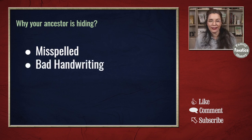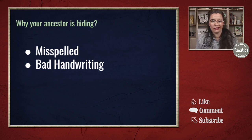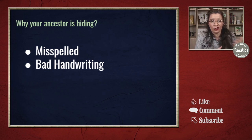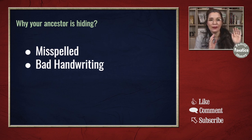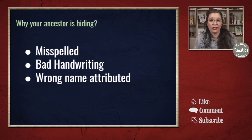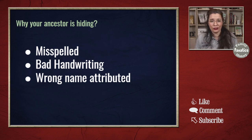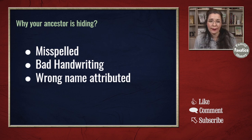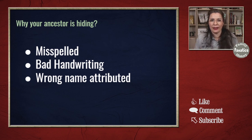Another cause of not finding your ancestor is that the person who recorded the record had really bad handwriting, so the indexer who typed the information into your searchable database did the very best they could. Blame the handwriter, not the indexer. There also could be a situation where somebody created a record with the wrong name attached to your relative — wrong first name, wrong middle name, or wrong surname. They're not in the records under the name you expected them to have.